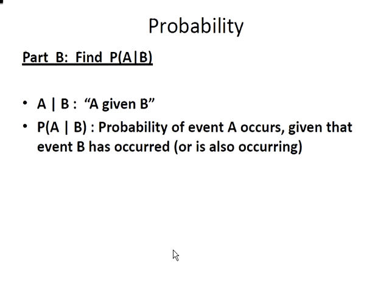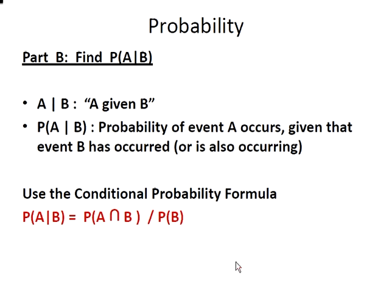The next part is to compute the probability of A given B. We're specifically interested in the probability of event A occurring given that B has occurred or is also occurring. The rule we use is the conditional probability formula: P(A∩B) divided by P(B) gives us P(A|B). B is on the right-hand side of the bar, which corresponds to B being the denominator — if it were B given A, we would have A in the denominator instead. Using our data, 0.3 divided by 0.5 gives us 0.6.